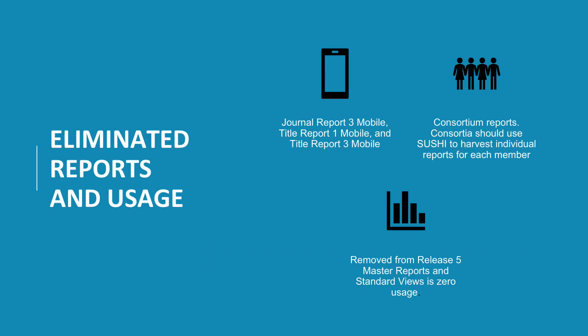Some reports from Release 4 of the Counter Code of Practice have been eliminated in Release 5. The three mobile reports — Journal Report 3 mobile, Title Report 1 mobile, and Title Report 3 mobile — have been eliminated because few platforms now offer a bespoke mobile view, relying instead on responsive design. Release 5 also eliminates consortia reports because their size makes creating and consuming them impractical; consortia should use SUSHI to harvest individual reports for each member. Counter is facilitating the creation of tools to make obtaining consortia usage a simple one-step process.